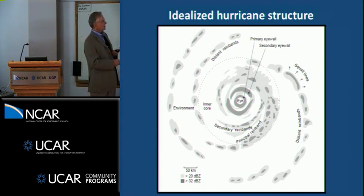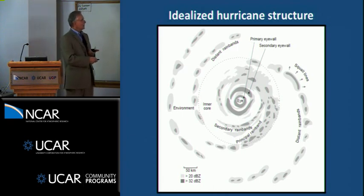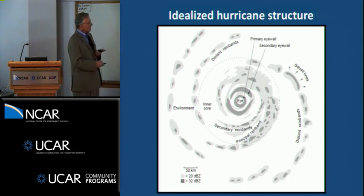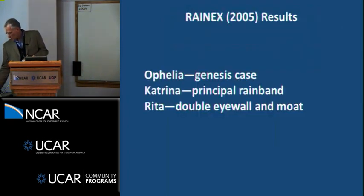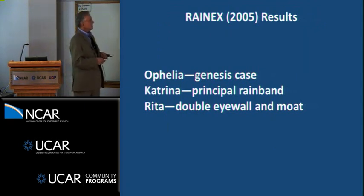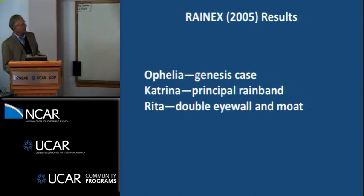Hugh Willoughby and Frank pointed out that one of the features in the interior region is the so-called principal rain band, which is bigger than the other rain bands. It's spiral, not circular, and it tends to be out toward the boundary between where the vortex is important and the outer environment. Secondary rain bands are smaller, propagate radially and azimuthally, and are probably associated with vortex Rossby waves. The eye walls can be one or two, depending on whether an eye wall replacement is happening. In this talk I'll be discussing eye wall clouds in the secondary eye wall situation, a principal rain band, and I'm going to start with Ophelia — a storm we caught right at the genesis phase.